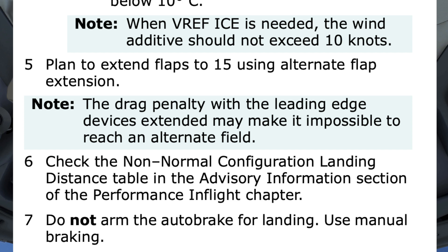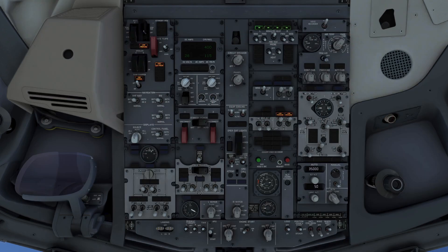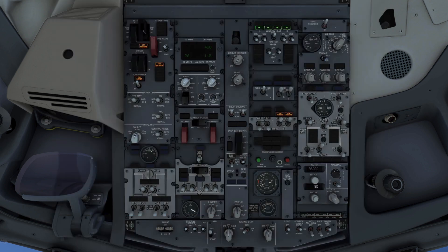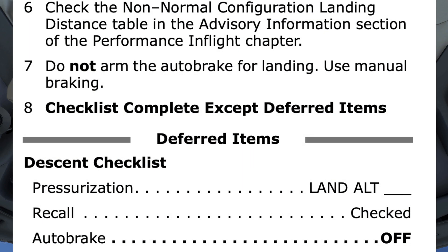Step 6: Check the non-normal configuration landing distance table in the advisory information section of the performance in-flight chapter. Step 7: Do not arm the auto-brake for landing — use manual braking. Step 8: Checklist complete. Accept deferred items, starting with the descent checklist.